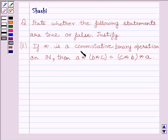If star is a commutative binary operation on N where N is the set of all natural numbers, then a star bracket b star c is equal to bracket c star b close bracket star a.